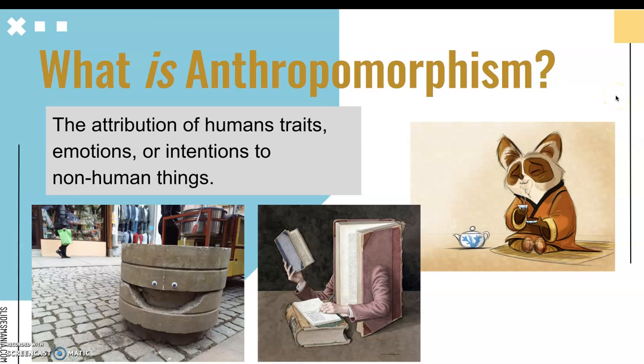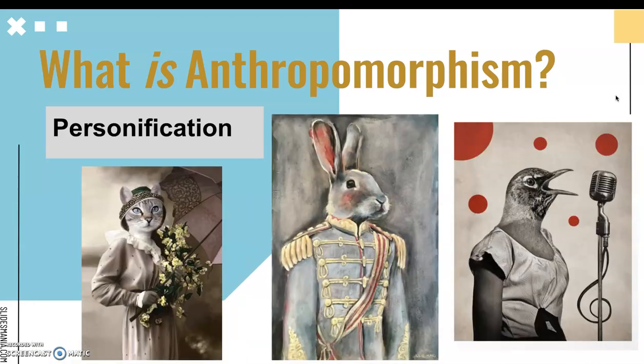Anthropomorphism is part of a tendency in human psychology called personification, where we attribute human forms and characteristics to abstract concepts such as nations, emotion, and natural forces. And we have a couple examples here of personification in terms of humans and animals.